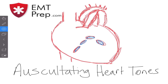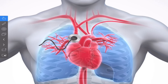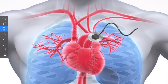Now let's look at the best places to auscultate each of the four heart tones. For the aortic valve, place your stethoscope roughly in the second intercostal space just to the right of the sternum. For the pulmonary valve heart tone, it's going to be in the second intercostal space just to the left of the sternum.